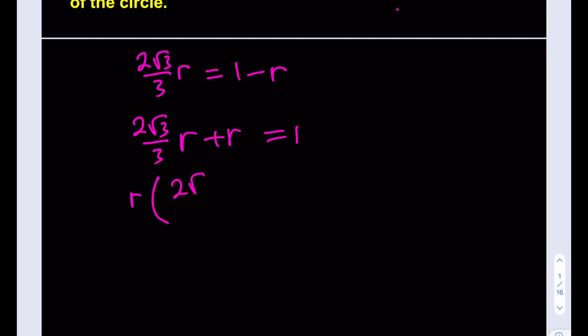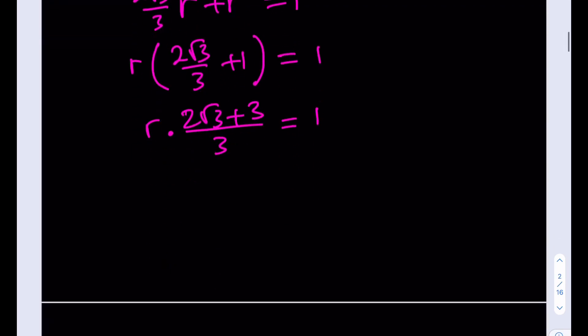That should give us 2 root 3 over 3 plus 1, and that equals 1. Then we make a common denominator, that'll be 2 root 3 plus 3 over 3, and that equals 1. If you cross multiply, R equals 3 over 2 root 3 plus 3.